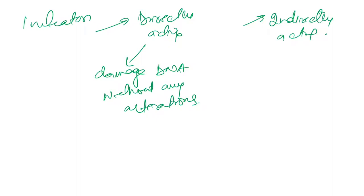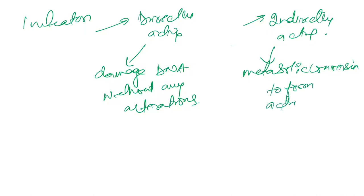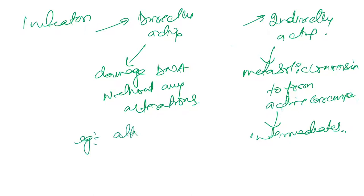Indirectly acting agents require metabolic conversion to form an active carcinogen. Some intermediates are formed before converting to active carcinogens. The example of directly acting agents is alkylating agents. For indirectly acting, the example is benzopyrene.